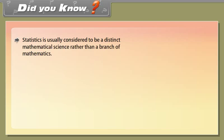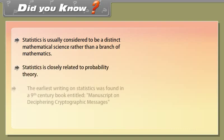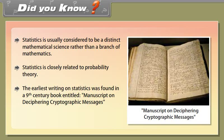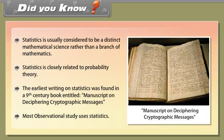Statistics is usually considered to be a distinct mathematical science rather than a branch of mathematics. Statistics is closely related to probability theory. The earliest writing on statistics was found in a 9th century book entitled 'Manuscript on Deciphering Cryptographic Messages.' Most observational studies use statistics.